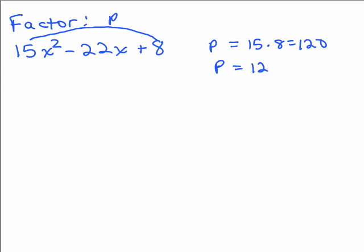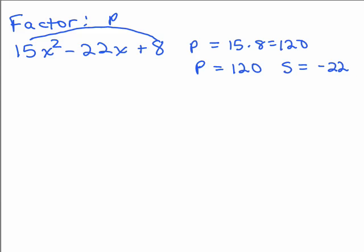So, the product is 120 and the sum is still the middle coefficient. So, let's write down numbers that we're trying to find two numbers that have a product of 120 and a sum of negative 22, which we've done before.